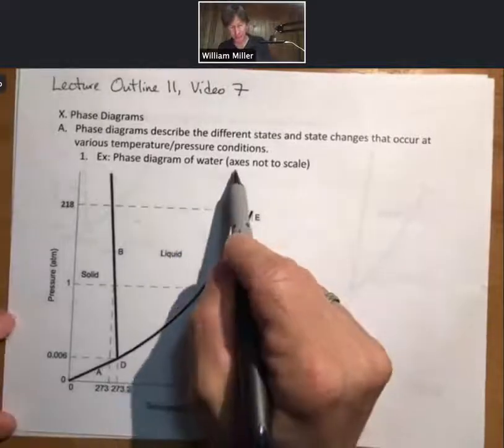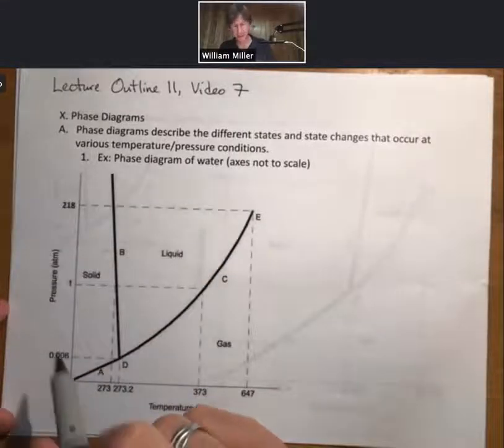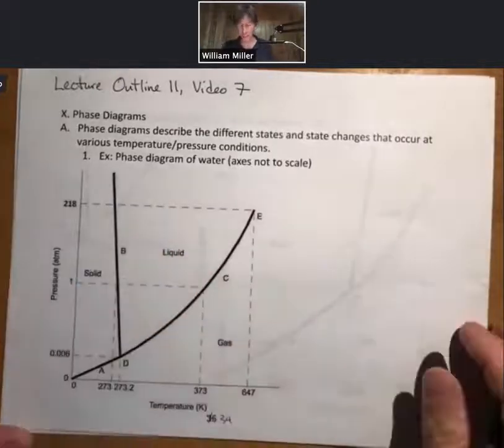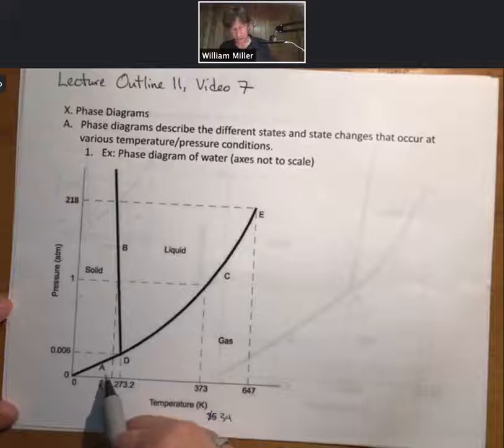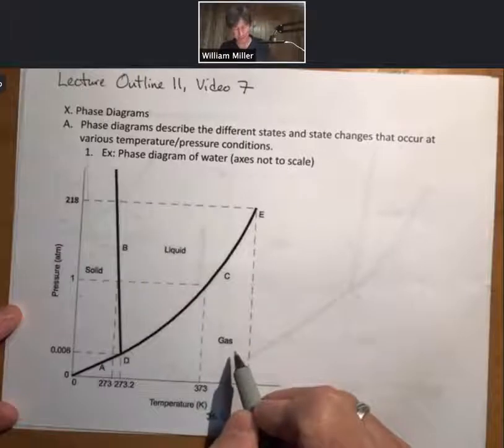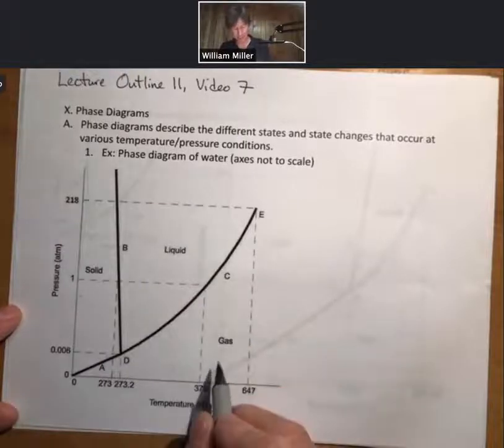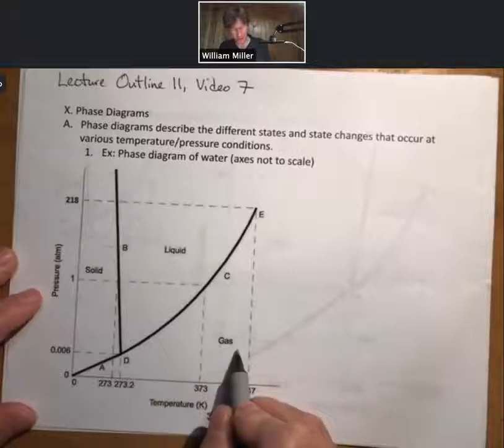But also typically it will be true that for whatever it is, the axes are not necessarily to scale. And this is a phase diagram of water. They'll almost always look like this. There'll be a series of lines, there'll be solid, liquid, and gas phases.